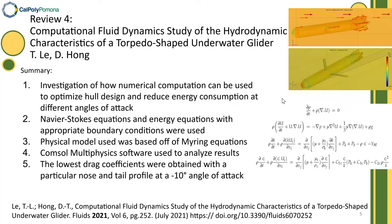The fourth review is a Computational Fluid Dynamics study of hydrodynamic characteristics of torpedo-shaped underwater gliders, investigating how numerical computation can optimize hull design. Navier-Stokes equations and energy equations were used, and physical models were based on Morison equations. CFD software was used to determine that an angle of attack of negative 10 degrees with a particular nose and tail profile was optimal.